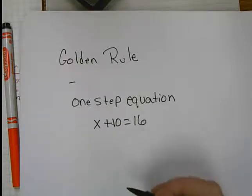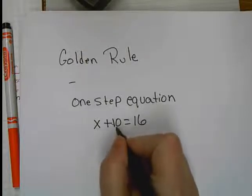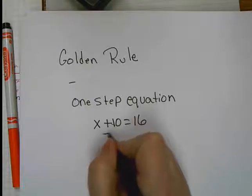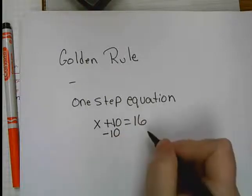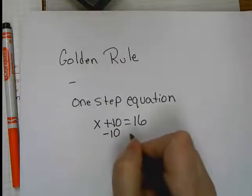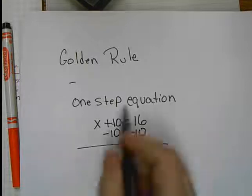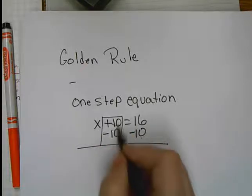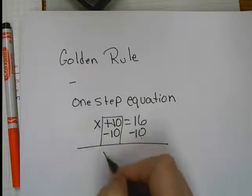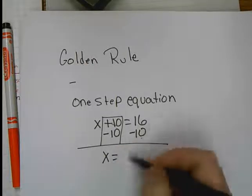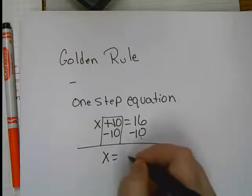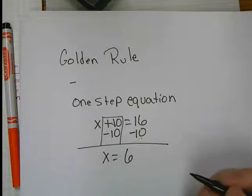Well, you do what's called its additive inverse. What's the opposite of positive 10? A negative 10. So, you do that, but you do it to both sides. So, here, these cancel out. What's left to come down? X. And then what's 16 minus 10? 6. And you're done.